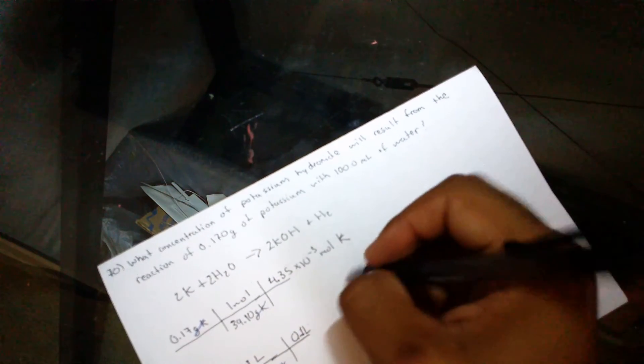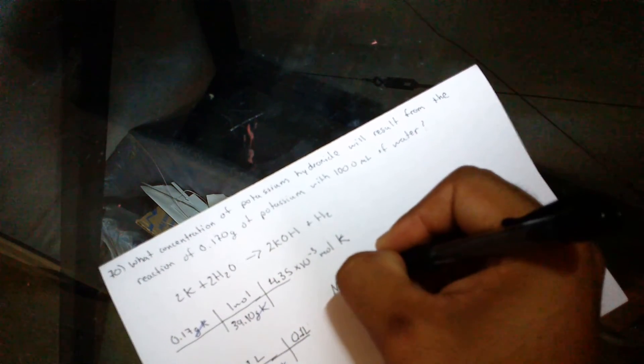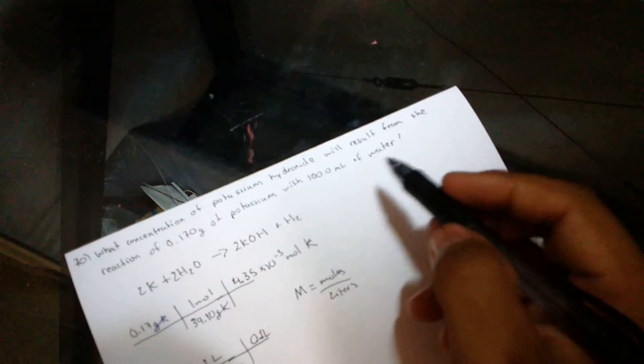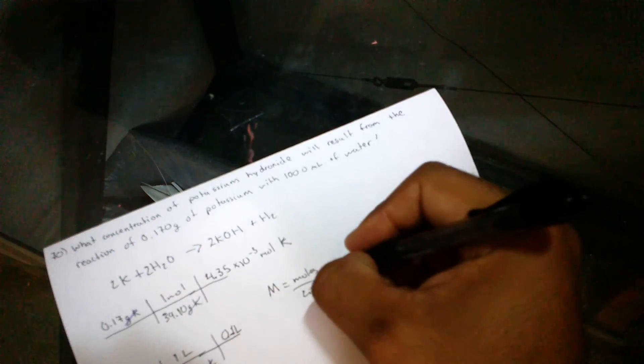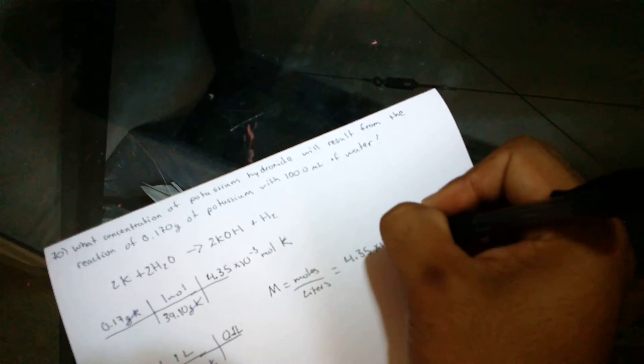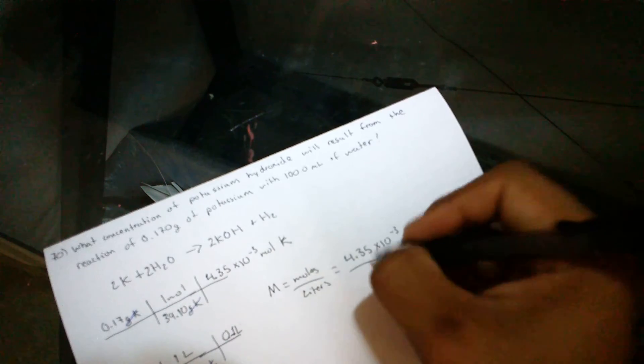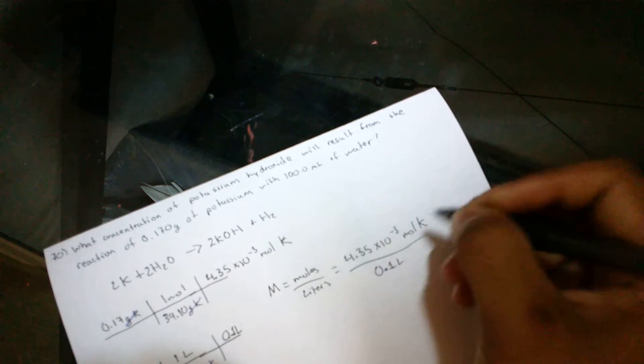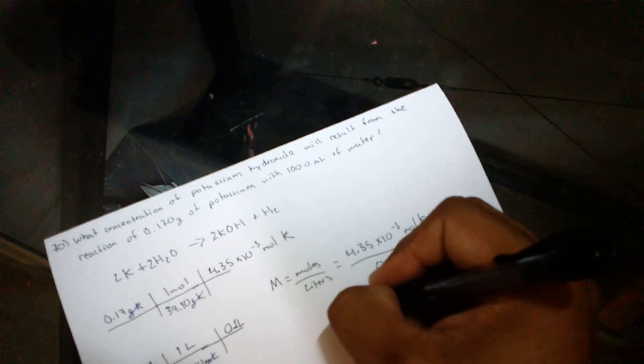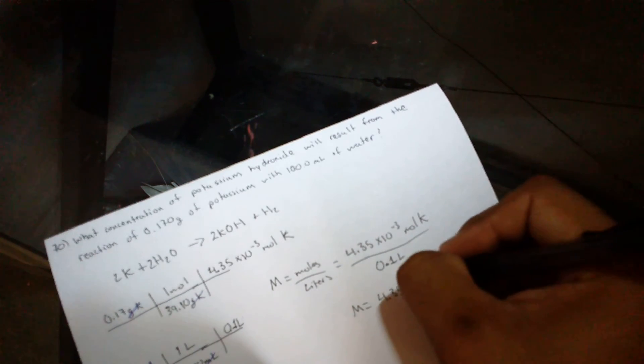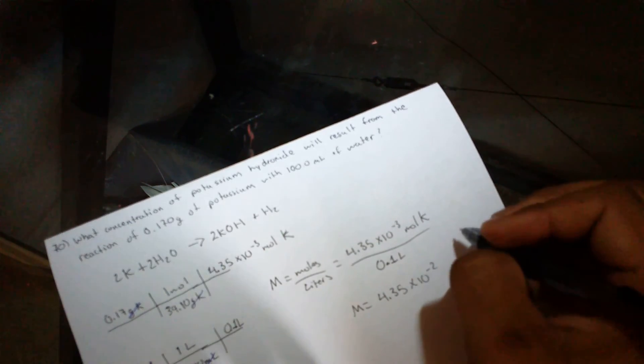So we know that our formula for concentration is moles over liters. Having our moles and our liters, we can easily plug those values in. And concentration is going to equal 4.35 times 10 to the negative 2. That is our answer.